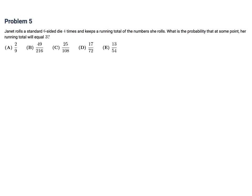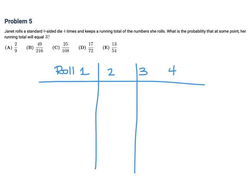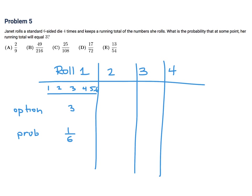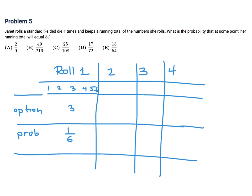Janet rolls a standard six-sided die four times and keeps a running total of the numbers she rolls. What is the probability that at some point her running total will equal 3? So we have rolls 1, 2, 3, and 4. On the first roll you can roll a 1, 2, 3, 4, 5, or 6. We want the running total to be 3. The only option is to roll a 3, and the probability of that is just 1 over 6, because there are 6 possibilities.